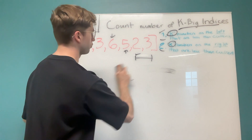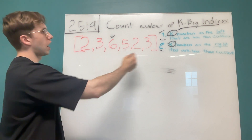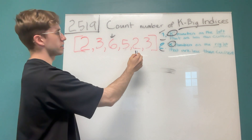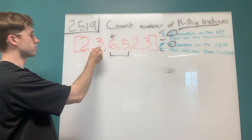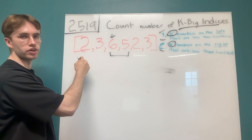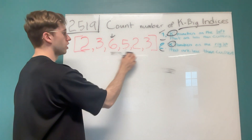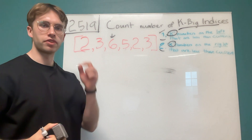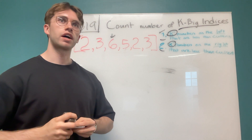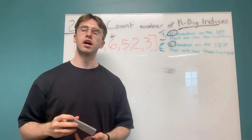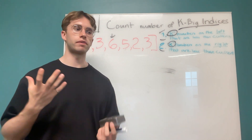Looking at this entire array, how many numbers meet this criteria? It's just going to be six and five, because three won't have two numbers on the left that it's greater than, and the same on the right-hand side. To implement this, the key insight is that we'll be using two max heaps — a common pattern for this type of problem.